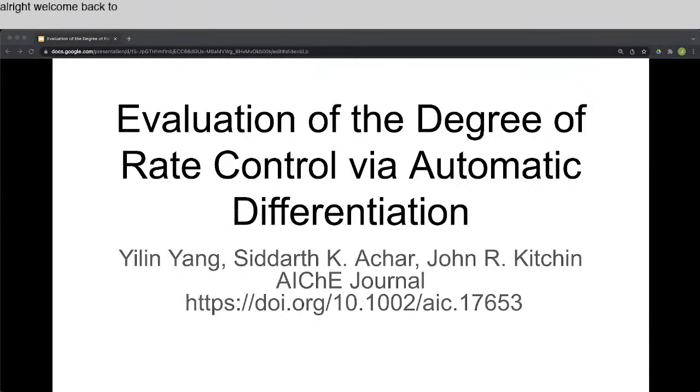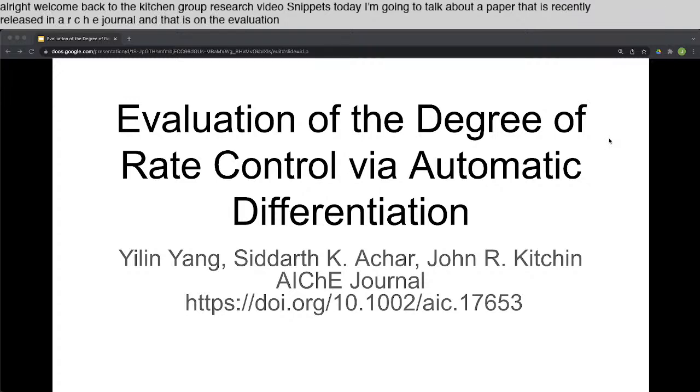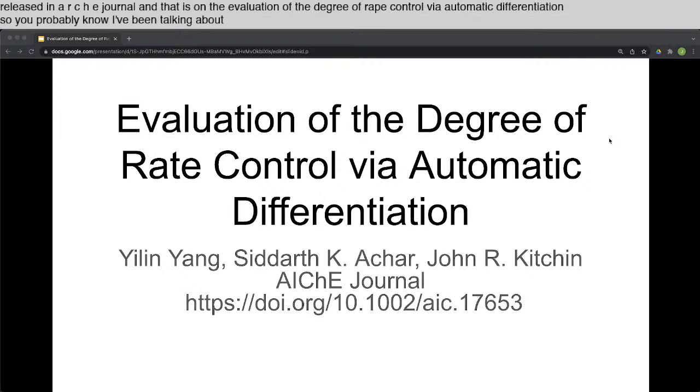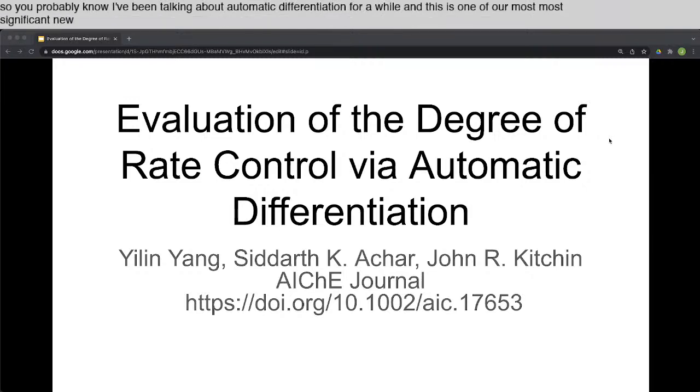Welcome back to the Kitchin Group research video snippets. Today I'm going to talk about a paper that is recently released in AIChE Journal, and that is on the evaluation of the degree of rate control via automatic differentiation. You probably know I've been talking about automatic differentiation for a while, and this is one of our most significant new works that shows what we can do with it.